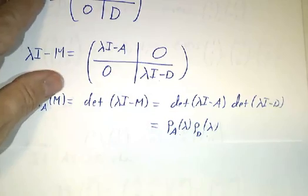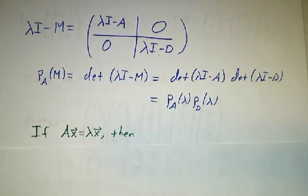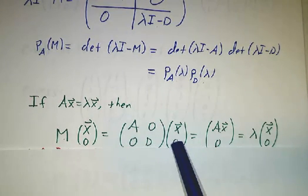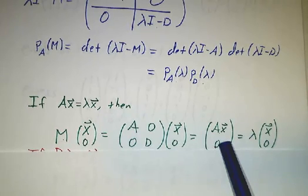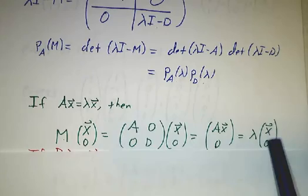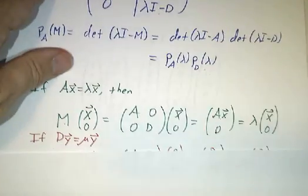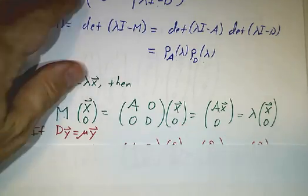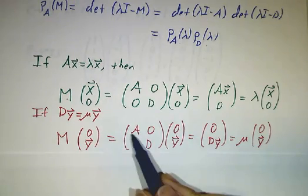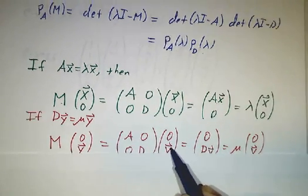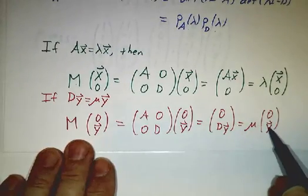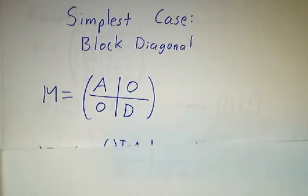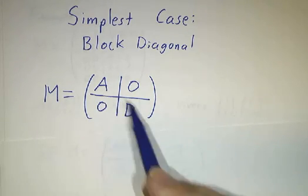When you take the determinant, the determinant of the left-hand side — that's the characteristic polynomial of M — is this determinant times this determinant. This determinant is the characteristic polynomial of A, and this determinant is the characteristic polynomial of D. So there we have our factorization. But it's more than eigenvalues — it's also eigenvectors. If you have an eigenvector of A, you can pad it with zeros to get an eigenvector of M. If you multiply [A, 0; 0, D] by [x; 0], you get Ax upstairs and D times 0 downstairs, giving you lambda*[x; 0]. And likewise, if you have an eigenvector y of D with eigenvalue mu, you pad it upwards: [A, 0; 0, D] times [0; y] gives [0; Dy] = mu*[0; y]. So block diagonal is really simple — the eigenvalues and eigenvectors of M are easily built from those of A and D.